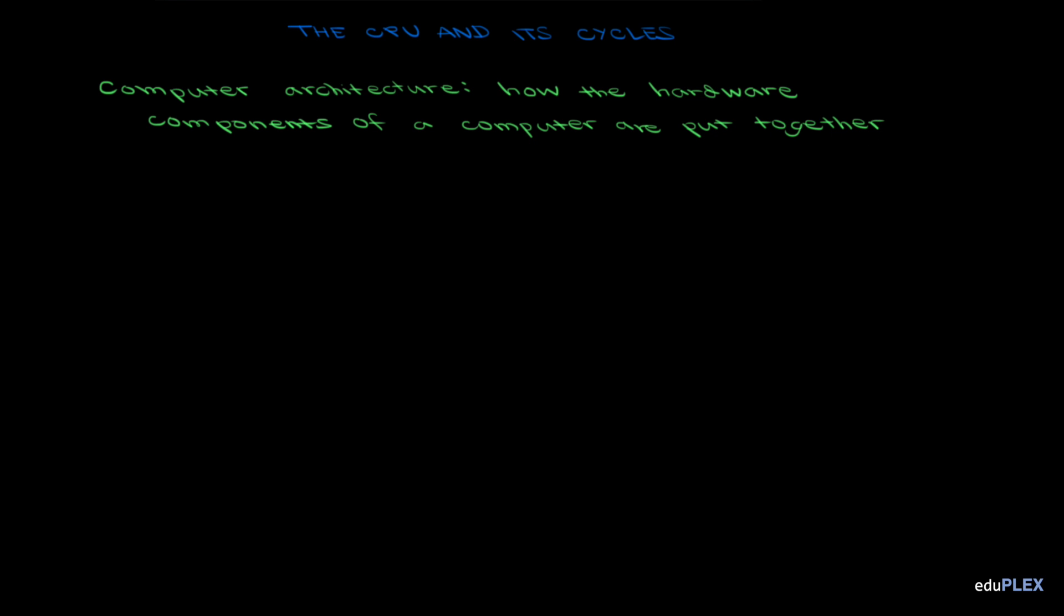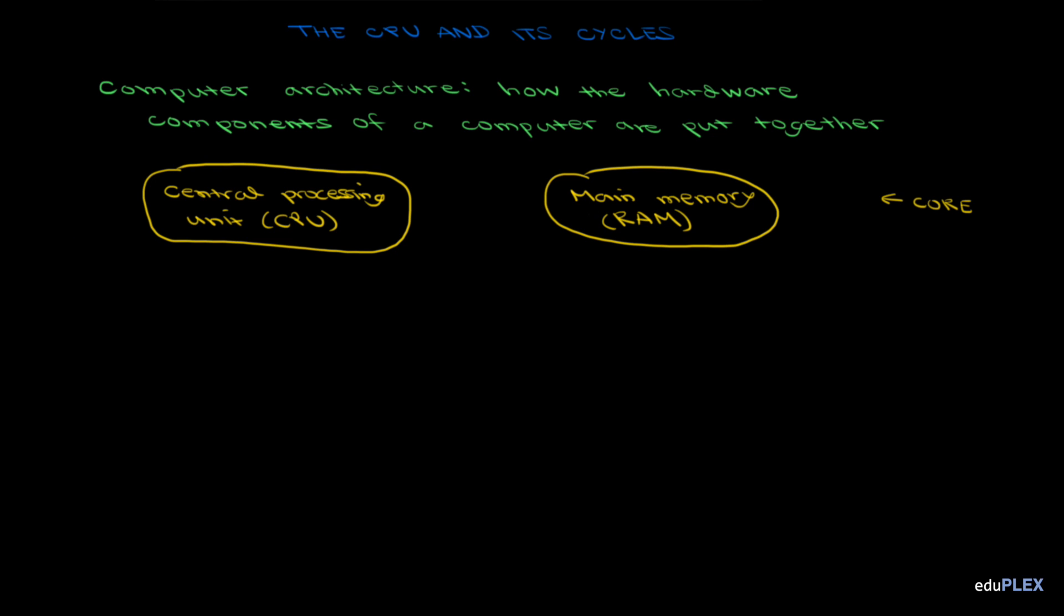So like we mentioned last time, the most important components of hardware are the CPU, or the central processing unit, and the main memory, or RAM. These two components make up the core of the computer. All other devices are called peripherals, like our secondary storage, so the hard drive,